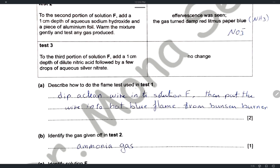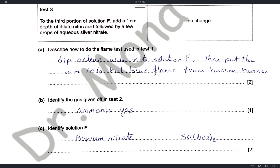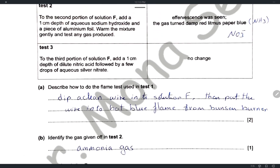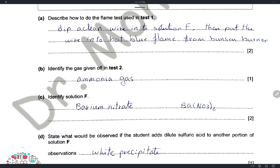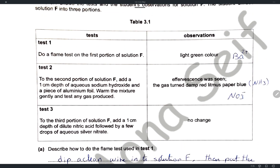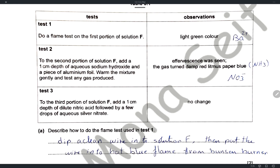To perform a flame test: clean a platinum wire, dip it into solution F, then place it into a hot blue flame from a Bunsen burner. The gas given off in test 2 is ammonia. Solution F contains barium ions and nitrate ions, so solution F is barium nitrate.